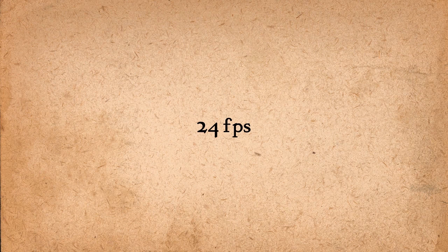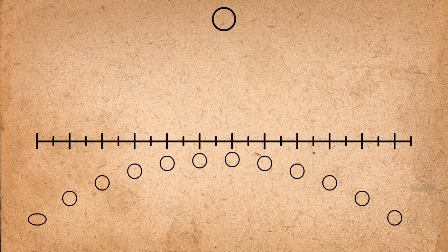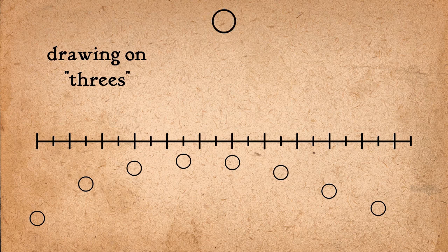The standard frame rate for movies is 24 frames per second. If one drawing is made for each frame, 24 drawings per second, that is called drawing on ones. If one drawing is made for every two frames, that's called drawing on twos, and every three drawings is threes, and so on.